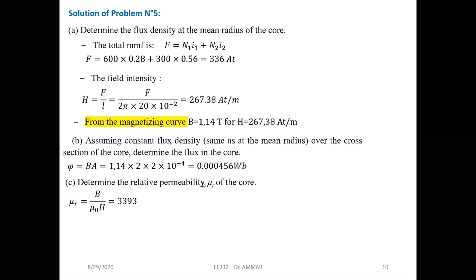Finally, determine the relative permeability. Since we have the values of B, H, and μ0, we can determine μr directly using μr = B / (μ0 × H).